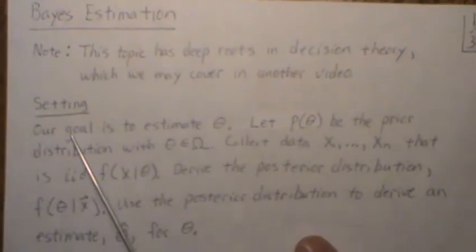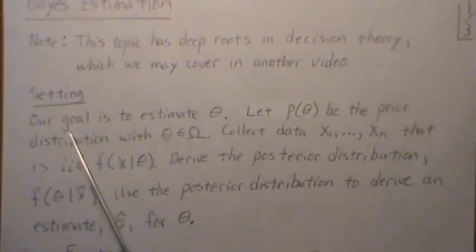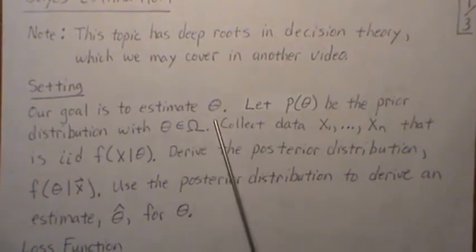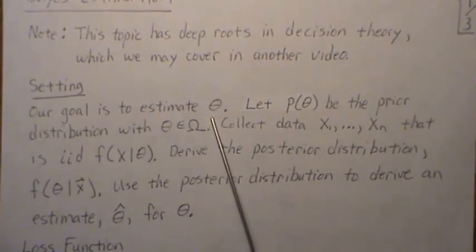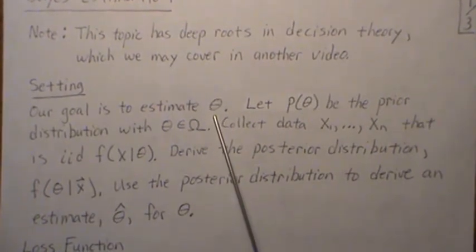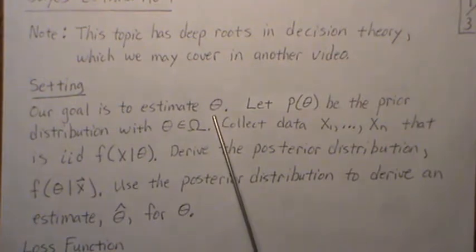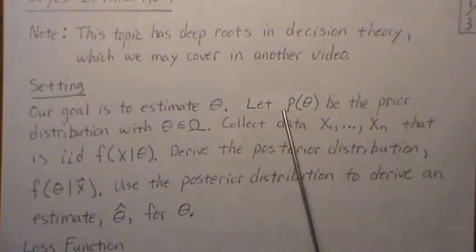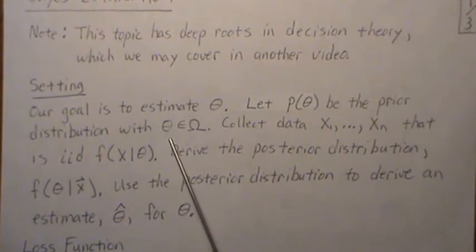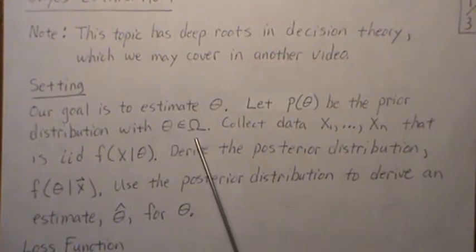The setting we're in is that our goal is to estimate this unknown parameter theta. Since it's the Bayes theory, theta is a random variable or could be a random vector. Let P of theta be the prior distribution of theta that lives in the parameter space omega.